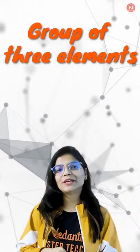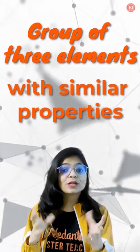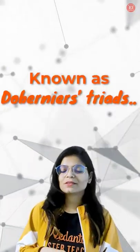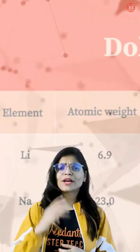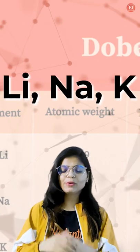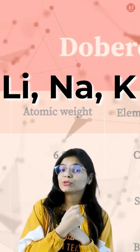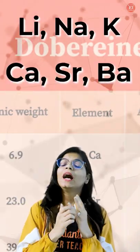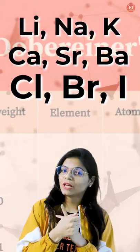In chemistry also there is a group of three elements which have similar properties, known as Döbereiner's Triad. Three triads which we should remember are: lithium, sodium, potassium; calcium, strontium, barium; and chlorine, bromine, iodine.